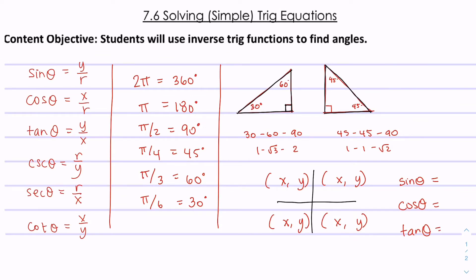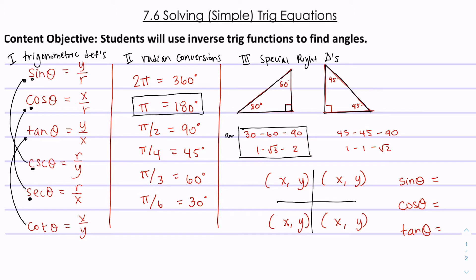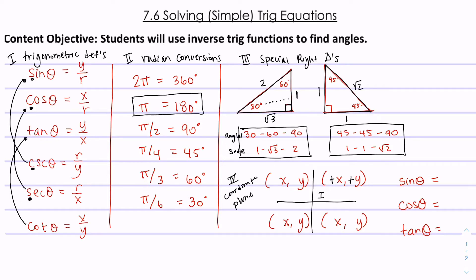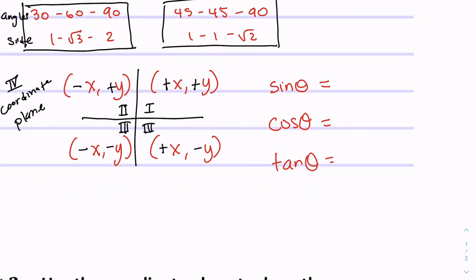Here's a rundown of everything we've gone over in this unit. On the left, part 1, I have my definitions. On the last section, part 4, we're talking about our coordinate plane. In quadrant 1, x is positive and y is also positive. In quadrant 4, we have a positive x and a negative y. This lesson will demand that you are very comfortable with all of your signs.